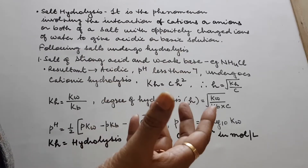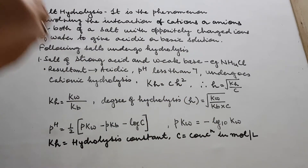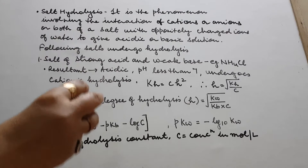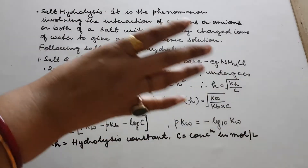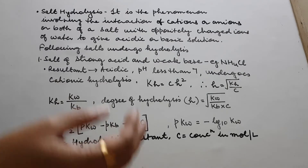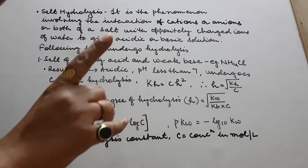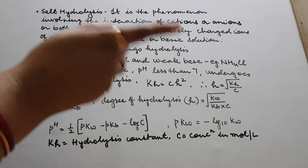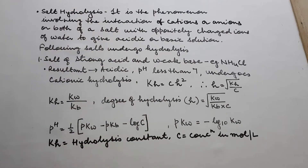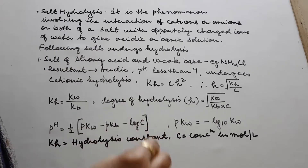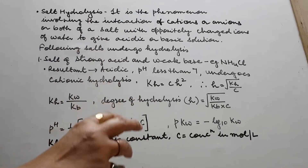If the pH is exactly 7, that is neutralization, not hydrolysis. Whenever a salt is dissolved in water and the pH of the resultant solution is not exactly 7 — either less than 7 or more than 7 — the salt is said to undergo hydrolysis. The phenomenon is known as hydrolysis.